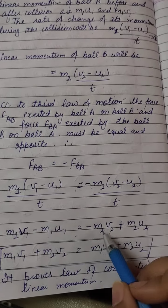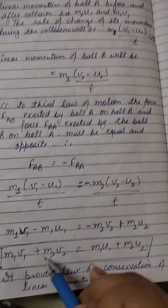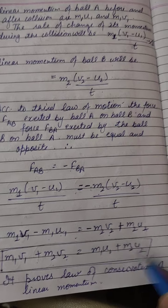Now we will rearrange terms. V terms on one side and U terms on the other side. So we have M1 V1 plus M2 V2 is equal to M1 U1 plus M2 U2.